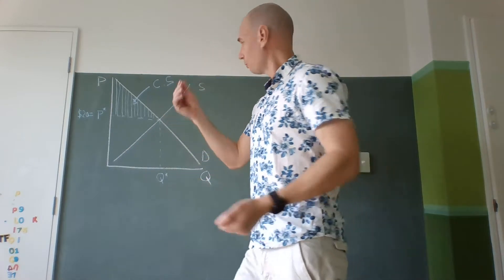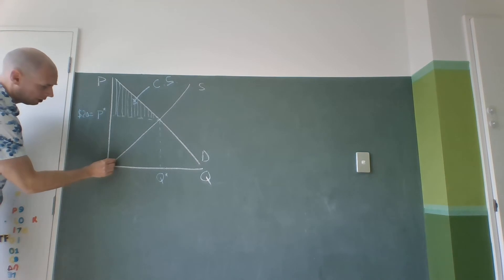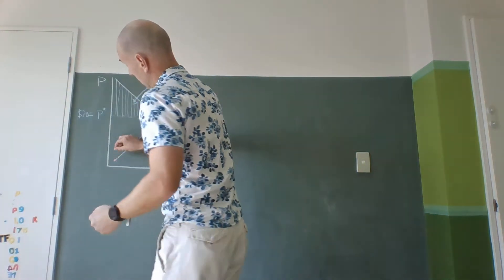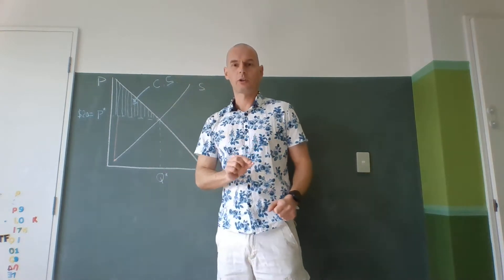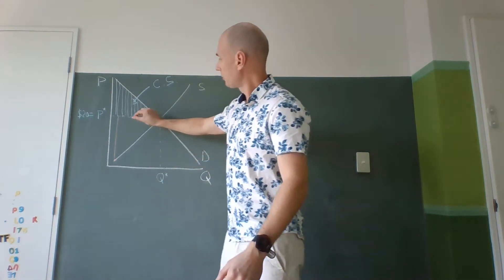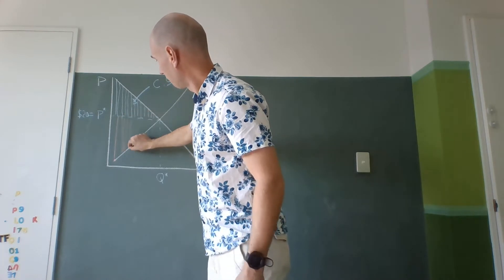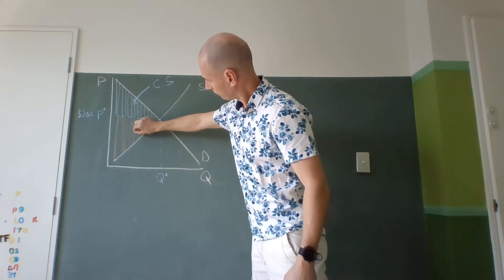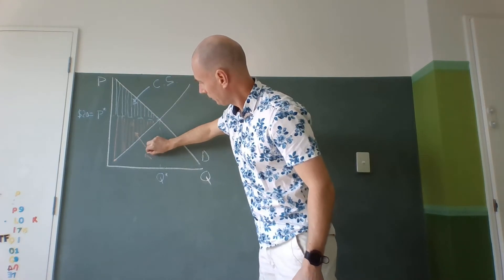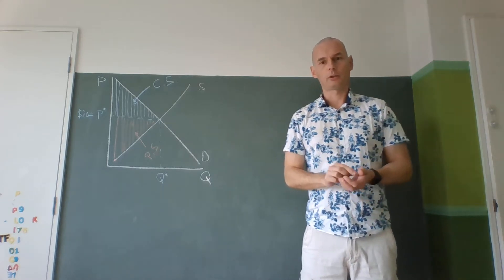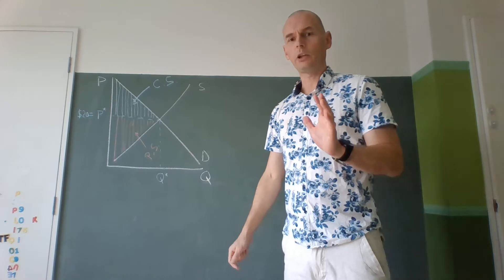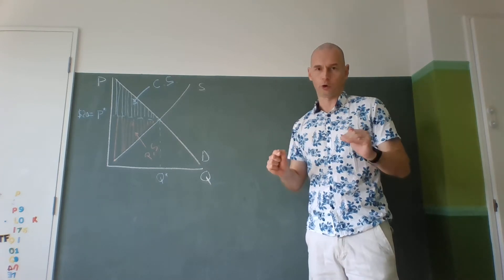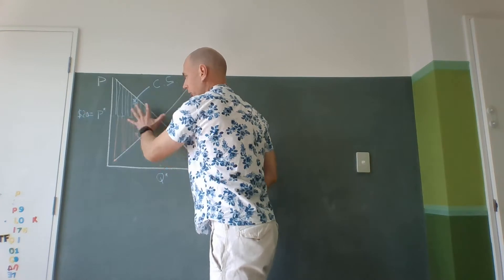So, same thing here. The market price is 20 bucks. The supplier right here is willing to accept as little as 3. This person or business realizes what we call the producer surplus. Now, this is very important: what is the objective of any good economic policy? The objective is to maximize the total surplus in the economy — it's to maximize the overall shaded area.